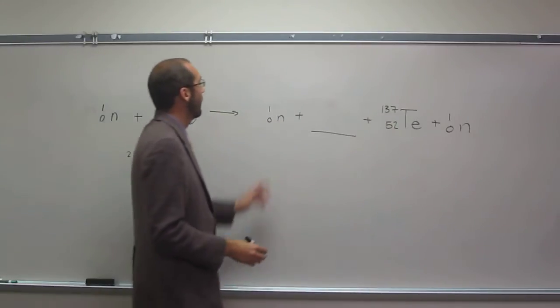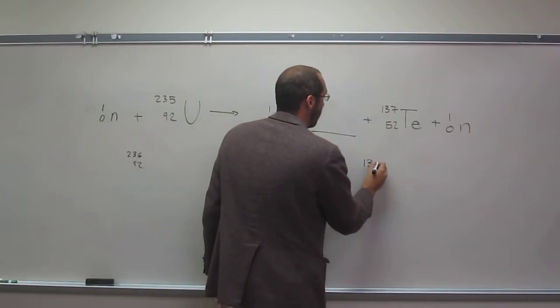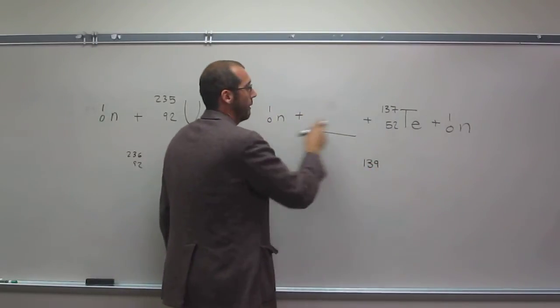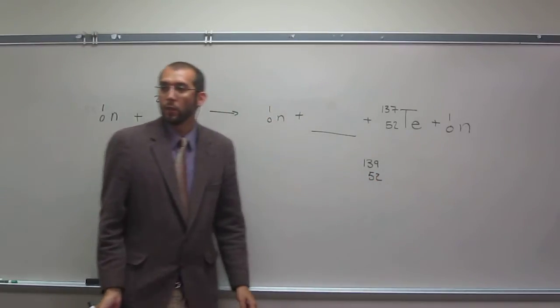So let's add what we've got up. 1, 2 plus 137, that's 139. And 0, 0 plus 52 equals 52.